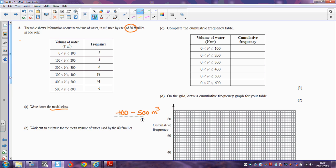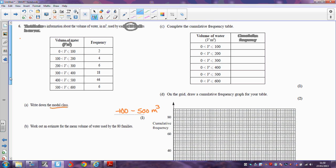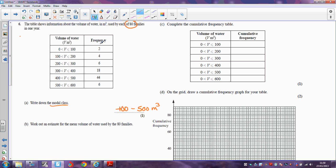Next bit says an estimate for the mean volume of water used by the 80 families. Now what you've got to realize here is that the first two families used somewhere between 0 and 100 cubic metres of water. And what we do is we assume that those two families used somewhere in the middle of that group. So we work out the midpoint of each group.